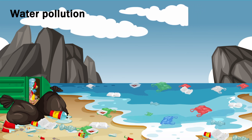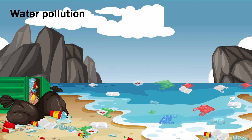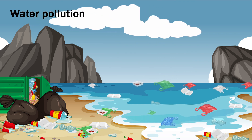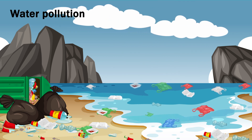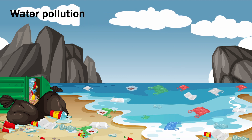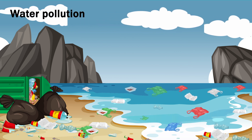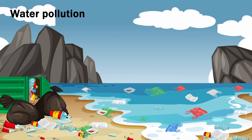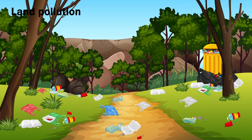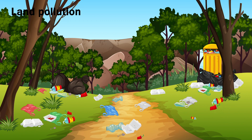Water becomes unusable for drinking, cooking, cleaning, swimming, and other activities. Pollutants include chemicals, trash, bacteria, and parasites. All forms of pollution eventually make their way to water. Land pollution, or the degradation of soil by contaminants, is largely the result of unsustainable practices.